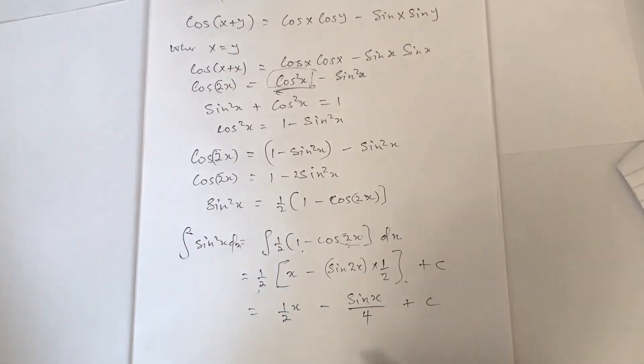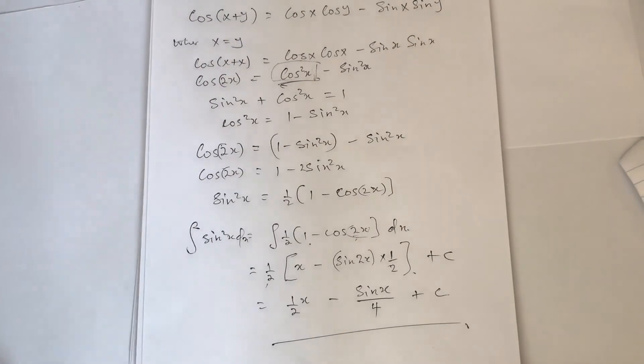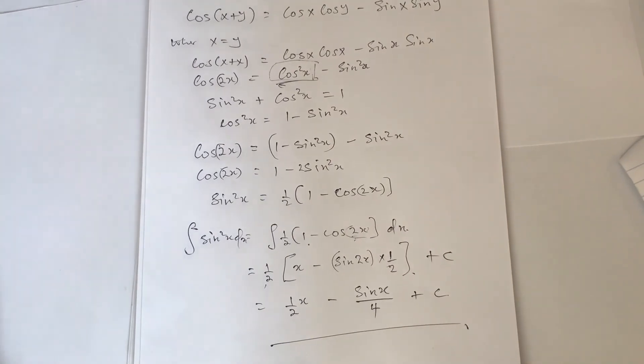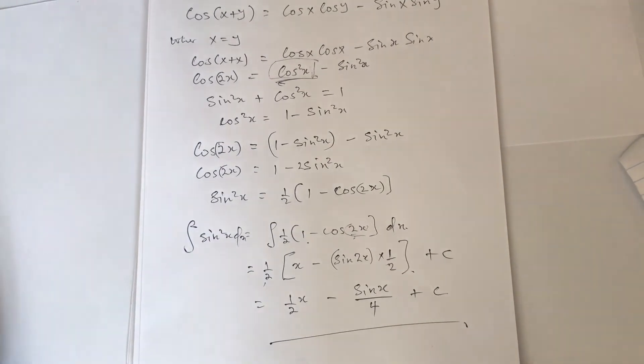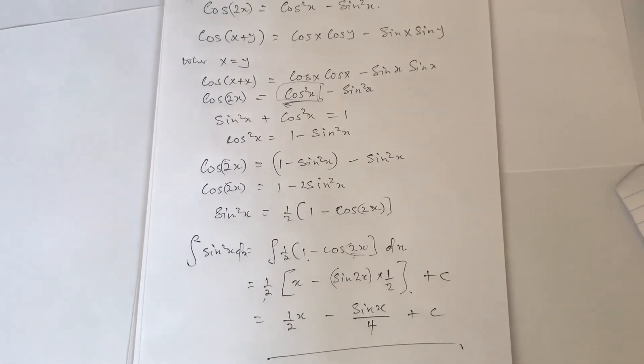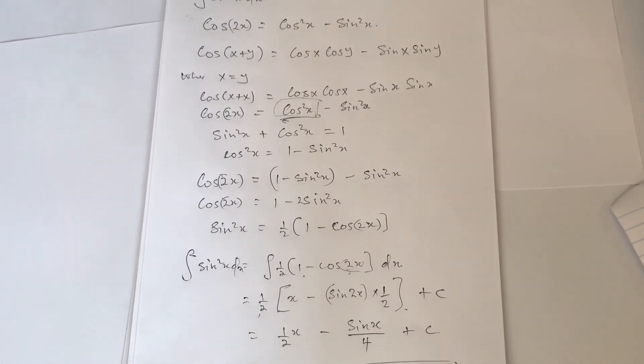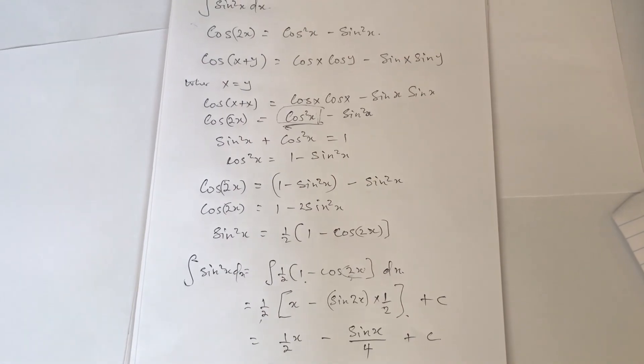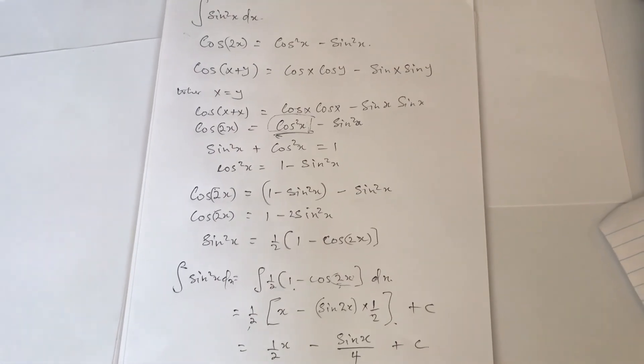So the integral of sine squared x is one half x minus sine 2x over four, plus the constant c. Thank you for watching. If this was helpful, please like and subscribe to our channel. Thank you very much.